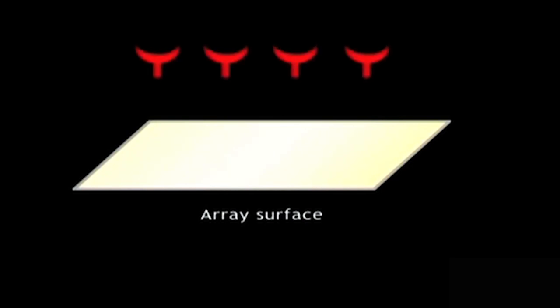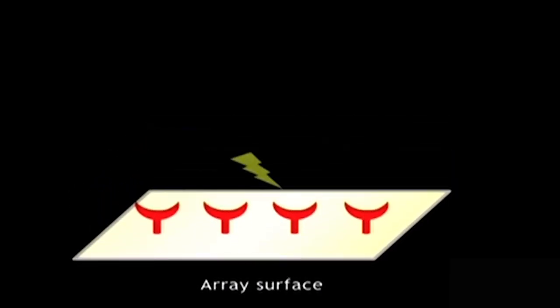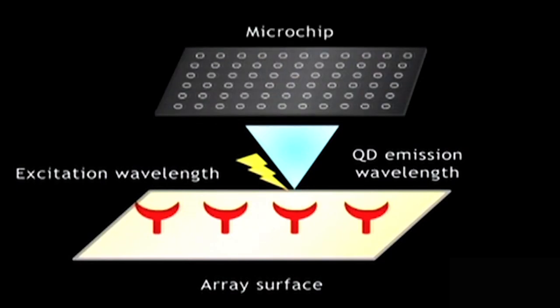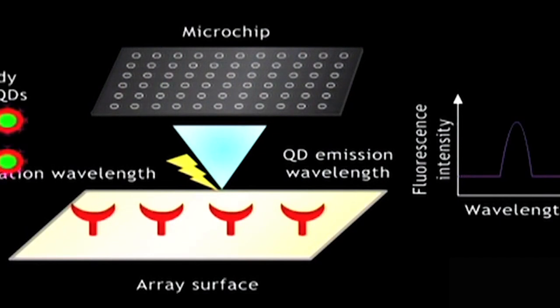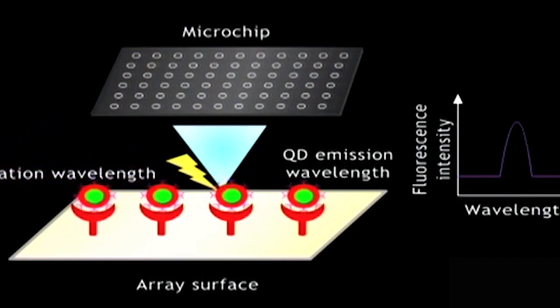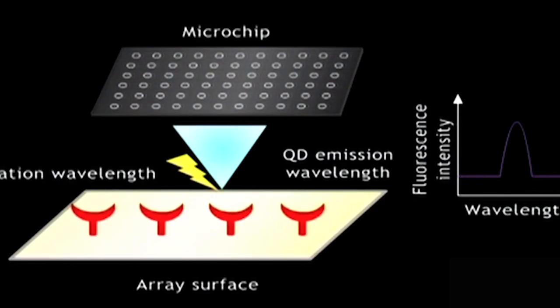Let us now look at this animation of quantum dots. The changes in the emission wavelength upon target binding to antibody-conjugated quantum dots are recorded by the microchip and used for detection of various biomolecules. Quantum dots are capable of detecting molecules down to femtomolar levels and provide significant advantages over conventionally used organic fluorophores. The wavelength versus fluorescence intensity is plotted, and a change in fluorescence intensity is observed when the molecule binds on the antibody surface labeled with quantum dots.